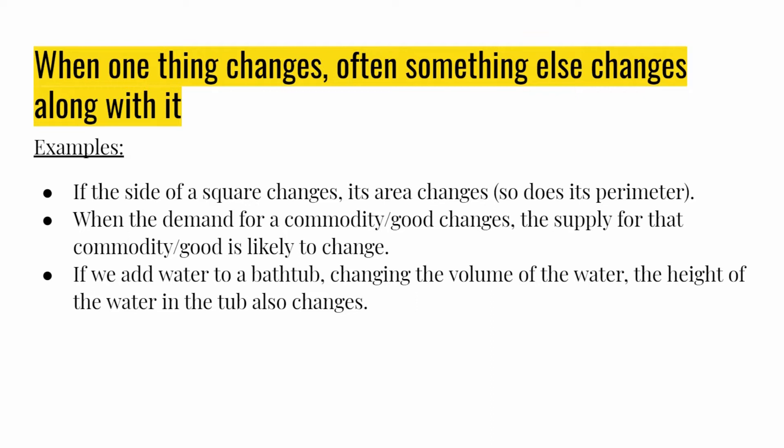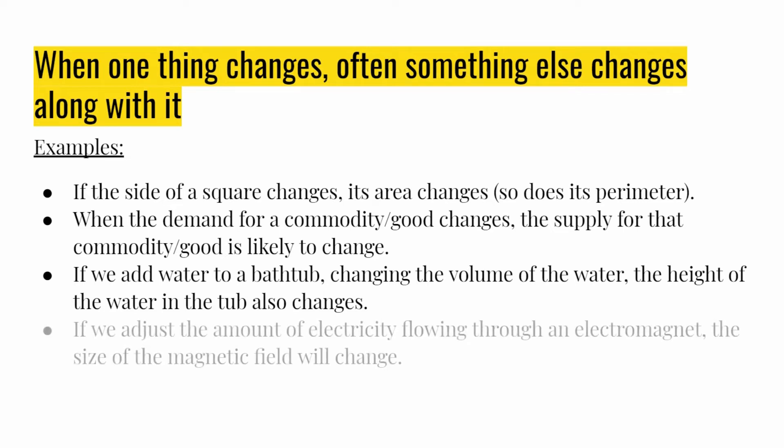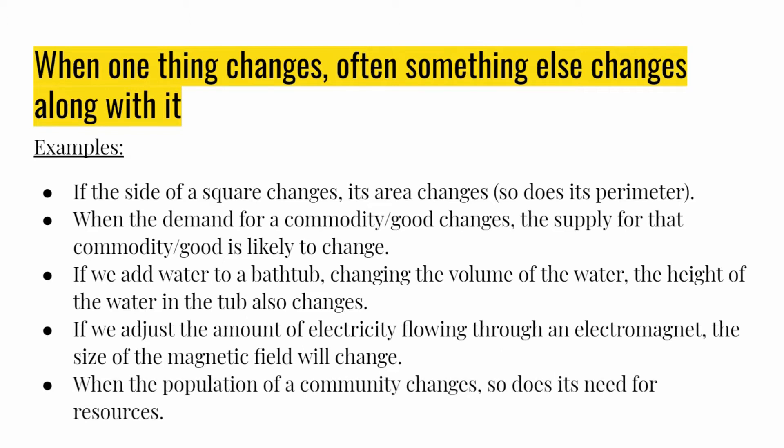You can also add water to a bathtub, which changes the volume of the water and also the height of the water in the tub. From physics, if you change the amount of electricity flowing through an electromagnet, that changes the character of the magnetic field — changing one thing in the system creates change in another. From biology, when the population of a community changes, so will its need for resources: food, water, space. Thinking about derivatives as rates of change, that's what related rates are about.